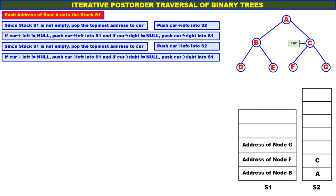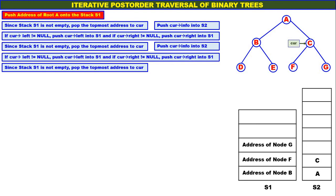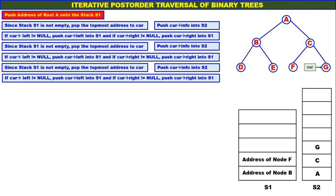Check whether stack S1 is empty. Since stack S1 is not empty, pop the topmost address to CUR. Topmost address is address of node G — pop it and assign to CUR. Push CUR info into S2, so G is pushed onto stack S2. There is no left child for G — it is null, so there is no push. There is no right child for G, therefore there is no push.